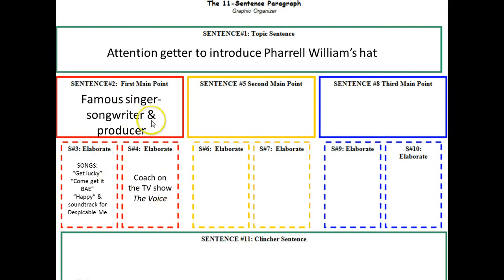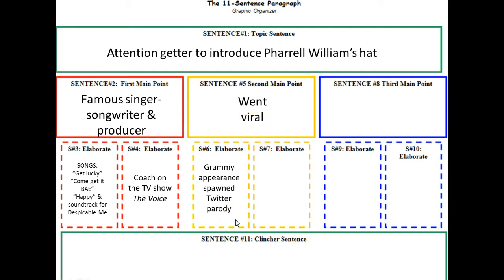Now I have something to say about my first point. Moving on to my second point: it went viral — it was popular, and everyone heard about it. People made fun of it on late night TV and on the internet. What can I point to in order to prove it went viral? After the Grammys, there was a Twitter parody that went out to millions of viewers all over the globe. The hat was such a phenomenon that Pharrell auctioned it off — he sold it to Arby's for $44,100, and all that money he gave to charity.